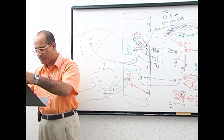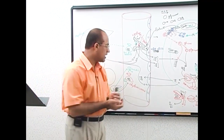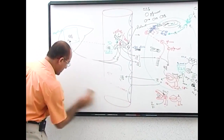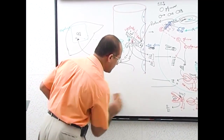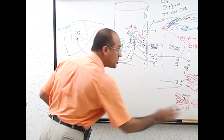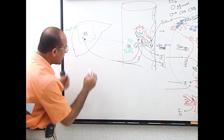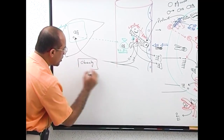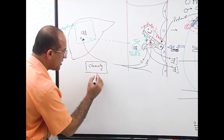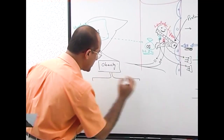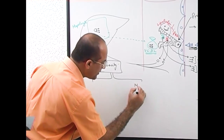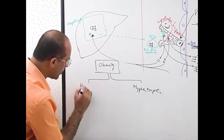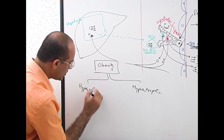Now very briefly I will talk about two types of obesity. We'll discuss that in detail in biochemistry. There are two types of obesity: number one is hypertrophic, and the other is called hypercellular.